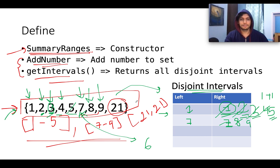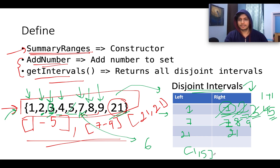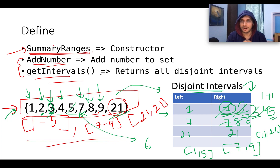Next is 9: 8 + 1 = 9, happy case again. Then 21: 9 + 1 = 10, 10 ≠ 21, not a happy case, so we create a new interval. The final state of our disjoint intervals is [1,5], [7,9], [21,21] — which is exactly what the question expected us to return. If you understood this much, you've essentially cracked the problem.